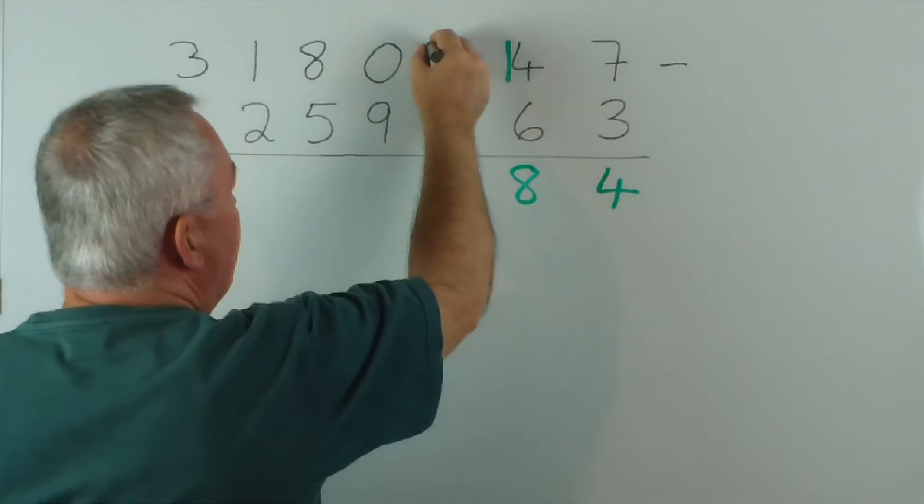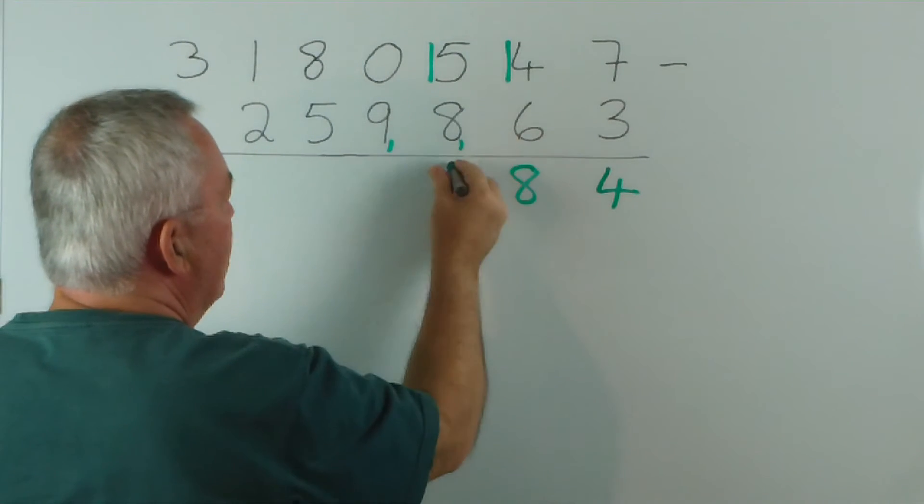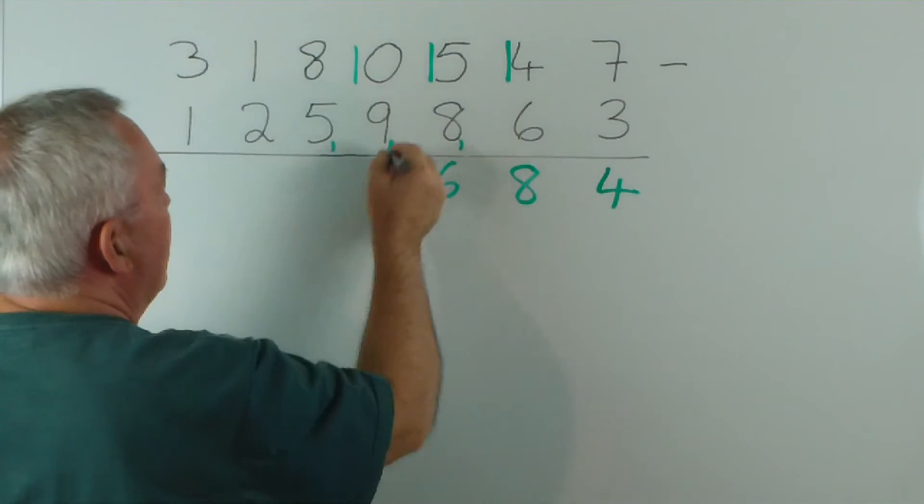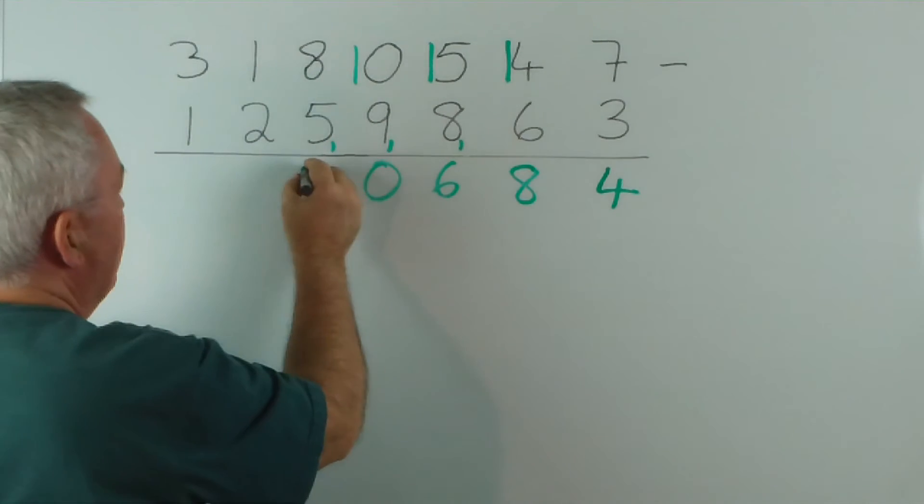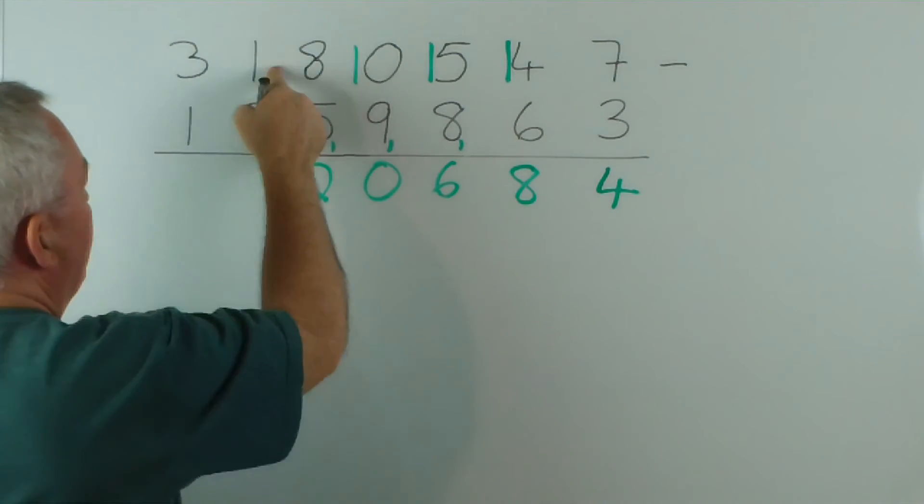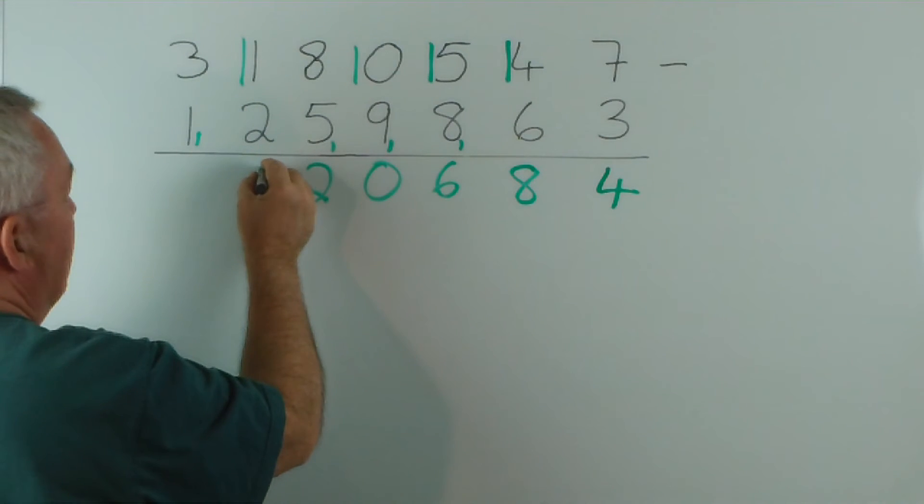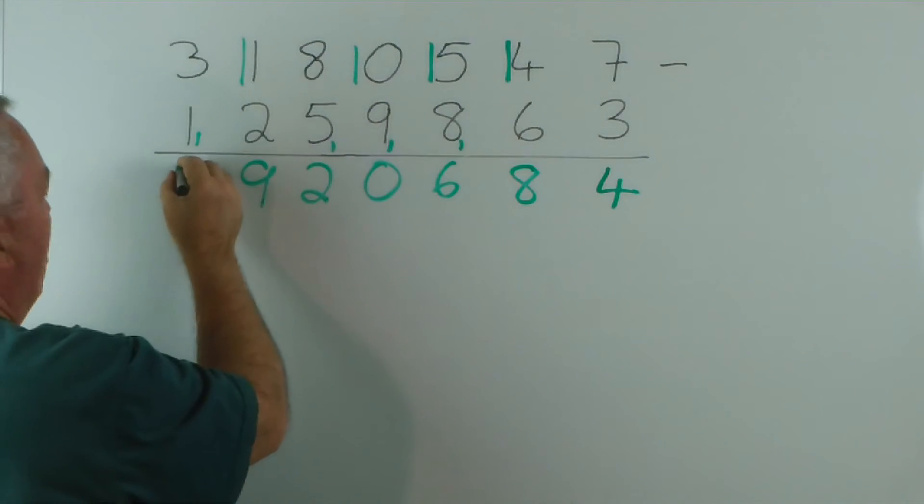5 take away 9 we can't do, so again we perform the same thing. 15 take away 9 is 6. 0 take away 10 we can't do. 10 take away 10 is 0. 8 take away 6 is 2. 2 from 1 we can't do, so it's 1 up, 1 down. 11 minus 2 is 9. And 3 minus 2 is 1.